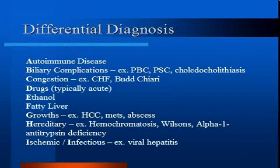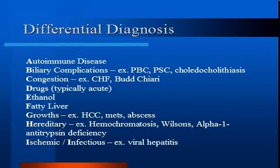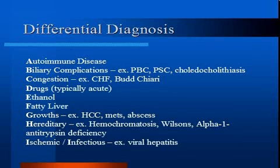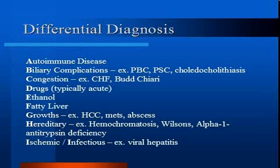Ethanol is a common reason for liver injury, both acute and chronic. The diagnosis is supported by an AST to ALT ratio of 2 to 1 or greater with an elevated GGT. Fatty liver and non-alcoholic steatohepatitis, or NASH, may present solely with mild elevations of the serum aminotransferases, which are usually less than four-fold elevated. NASH is associated with obesity and type 2 diabetes.